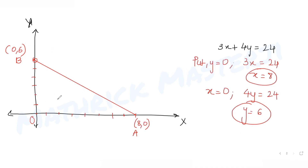We need to find the incenter of this triangle. The incircle is the circle inscribed inside the triangle that touches all three sides. We need to find the center coordinates of this incircle — let's call the center C.